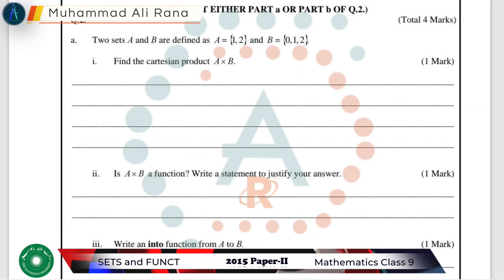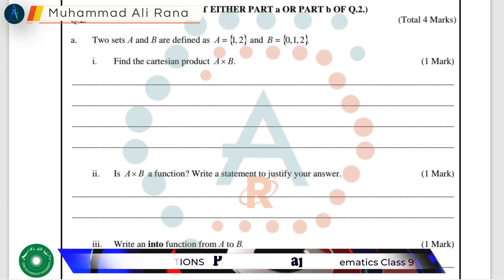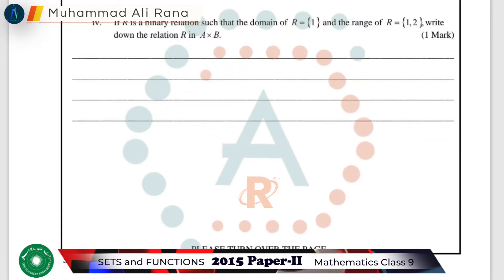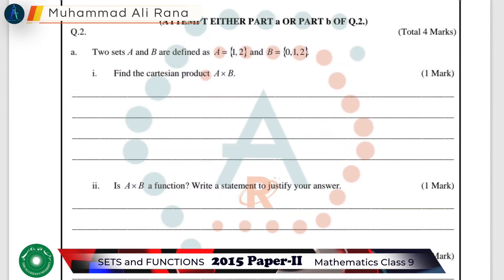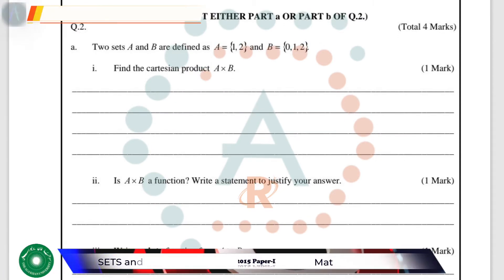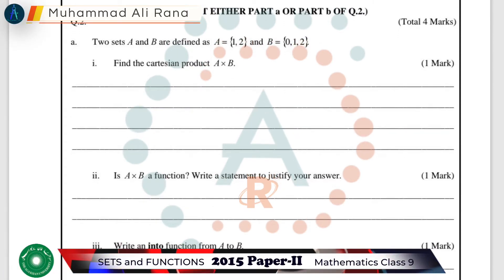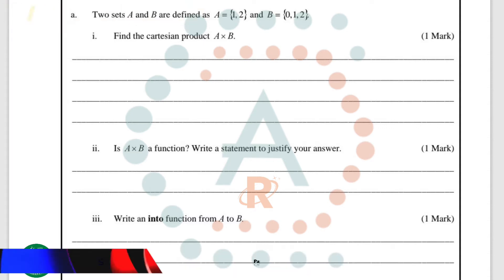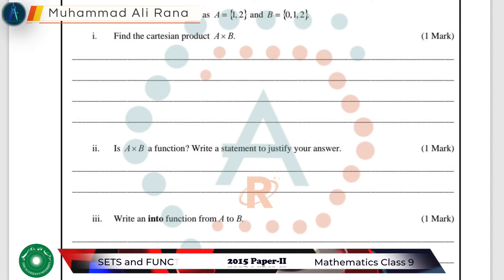Hello and welcome. Today in this video lecture we are going to solve a question from class 9 mathematics. We are going to solve a question on certain functions from the 2015 paper 2. In question number two, we have two sets: Set A is {1, 2} and Set B is {0, 1, 2}.